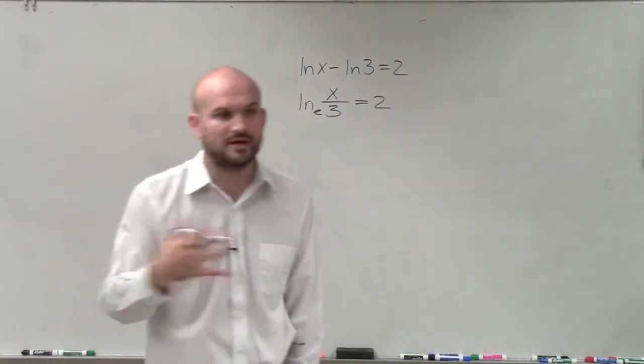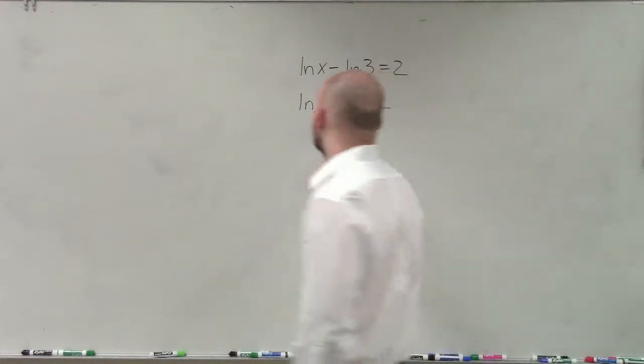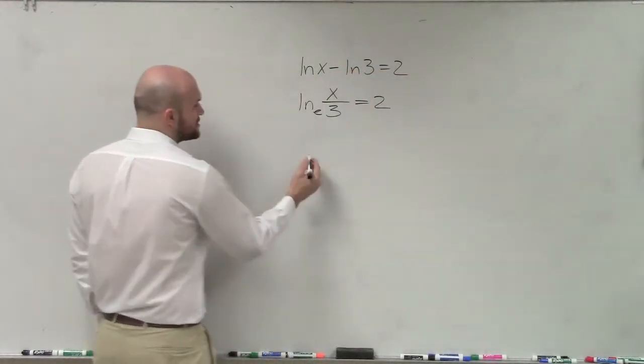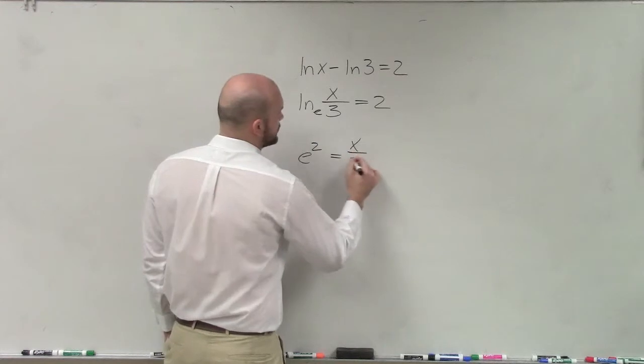That's our natural logarithm. We don't write it. We know that ln has the base e. I can rewrite this in my exponential form. e squared equals x over 3.